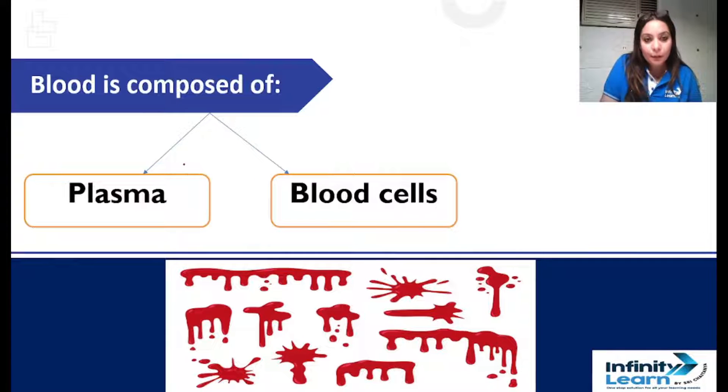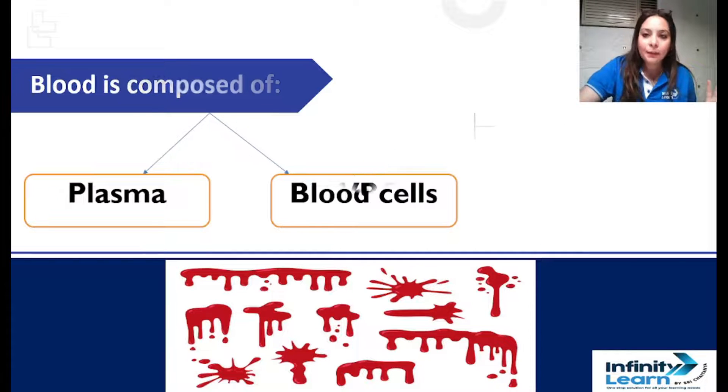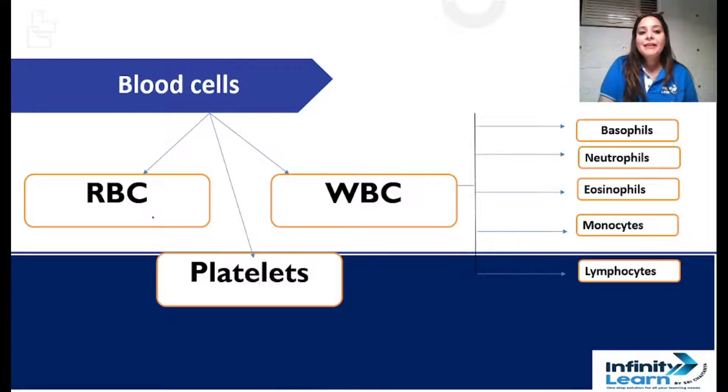So in the blood there are two things. One is plasma and one is blood cells. Don't get confused, don't get nervous. I will now simplify this and you will understand everything. Blood cells are RBC, WBC, and platelets. And WBC is further divided as basophils, neutrophils, eosinophils, monocytes, and lymphocytes.